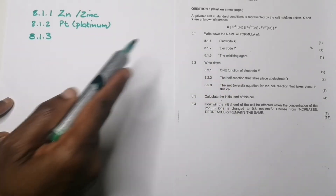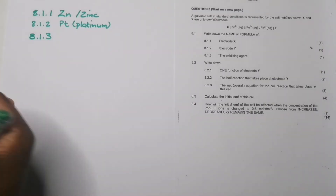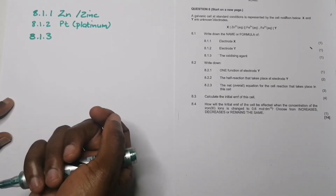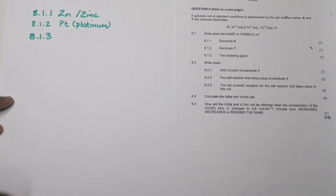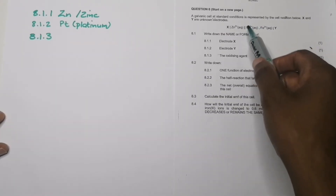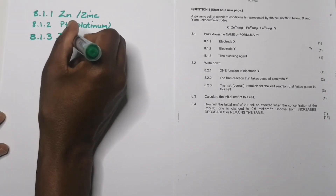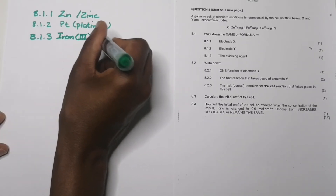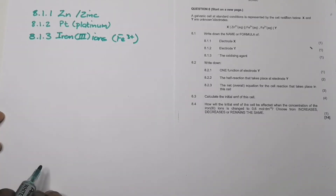For 8.1.3, they ask for the oxidizing agent. Remember: the oxidizing agent is the substance that undergoes reduction — think of it the other way around. The reducing agent is the substance that undergoes oxidation. So which substance underwent reduction? It's the Fe³⁺ ions — they receive the electrons. So the oxidizing agent is the Fe³⁺ ions.